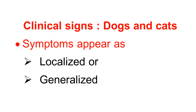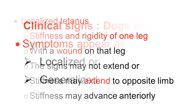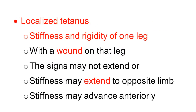That is different from other animals. We will discuss here localized tetanus signs in dog and cat. The stiffness and rigidity observed in one leg, with a wound on that leg. Why is it on one leg? We have seen in pathogenesis. That means, when little quantity of neurotoxin is produced by the organism.